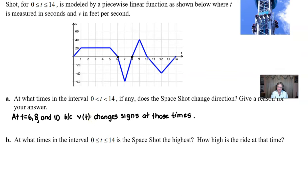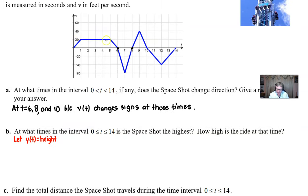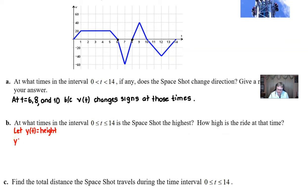Next up, at what times in the interval 0 to 14 is the Space Shot the highest? And how high is the ride at that time? Well, this one's going to take a little bit more work, because in order to do this, we're finding the maximum value. What are we finding the maximum value of? Well, it would be the maximum height. So why don't we let y(t) equal the height? After all, y is a great number to use, because when we've graphed, we could think about the y-axis as being a height. So to do that, we've got to find y prime. Well, guess what y prime is? It is equal to v.